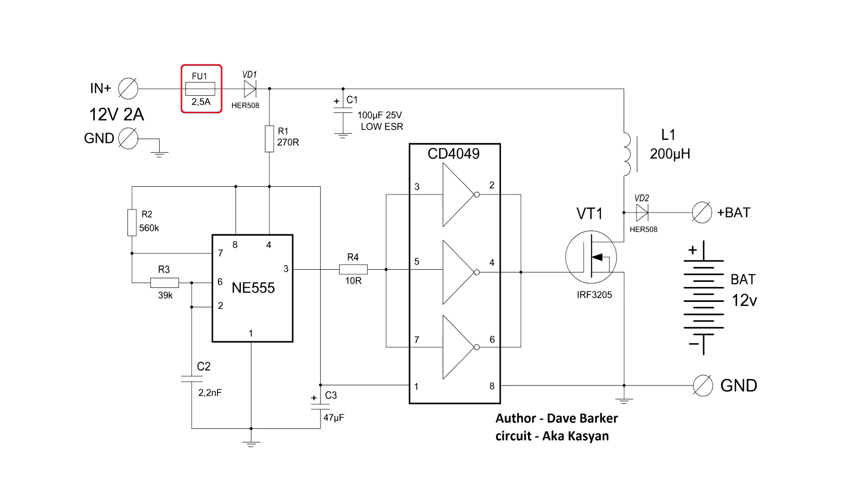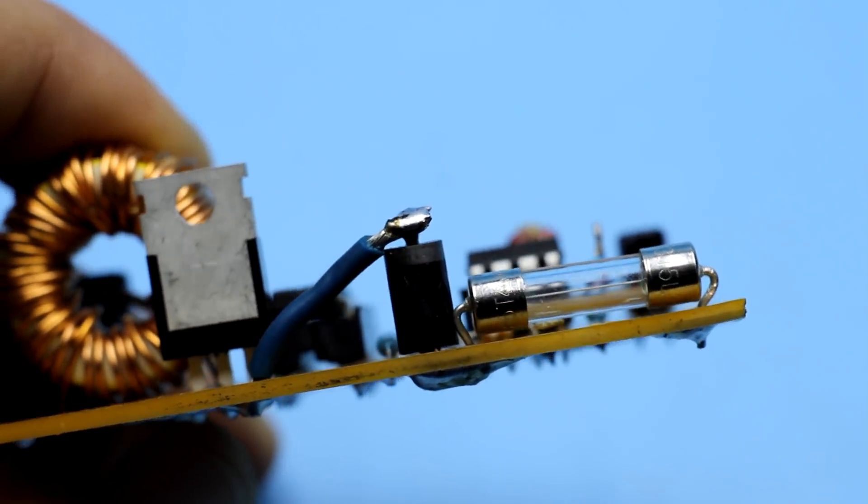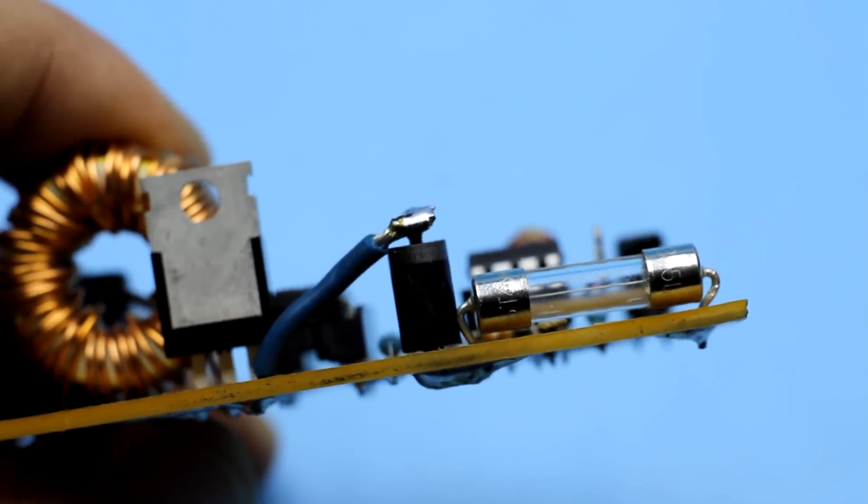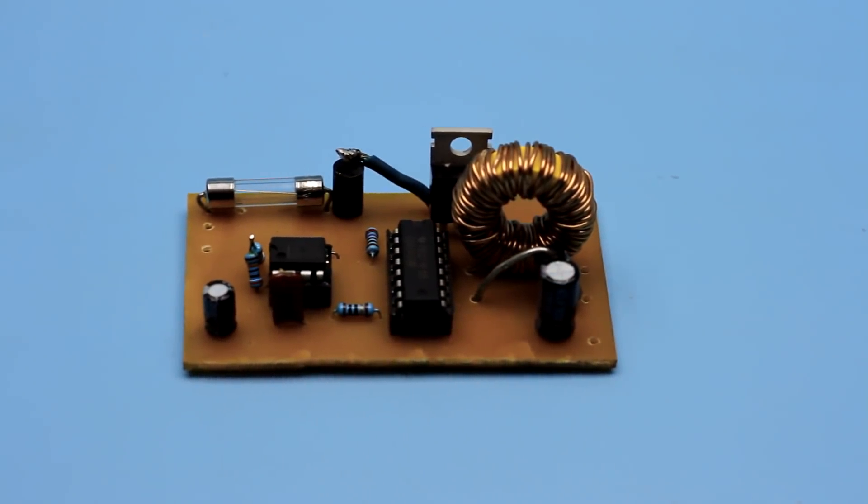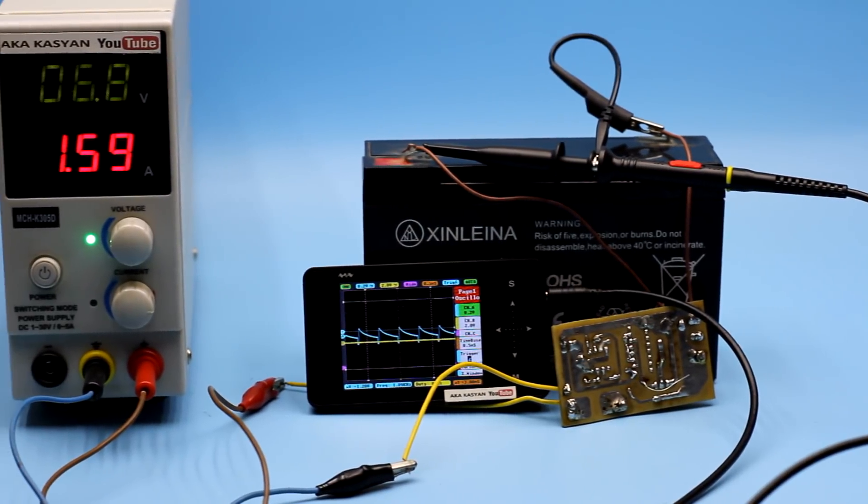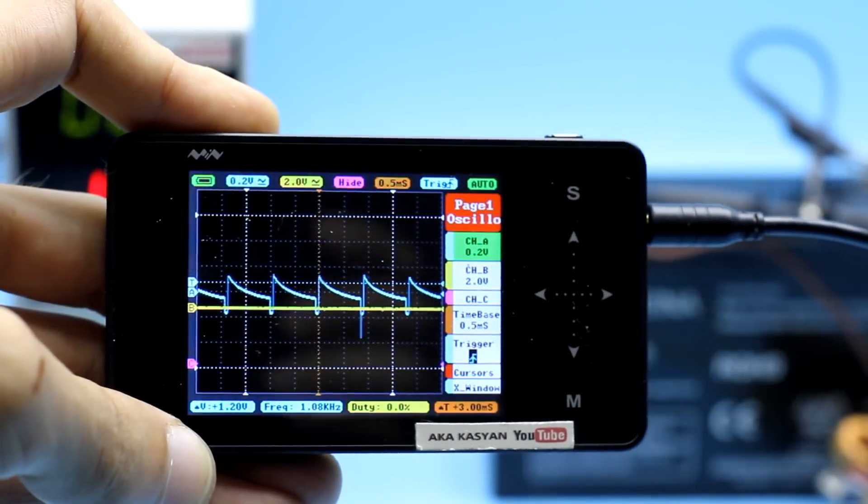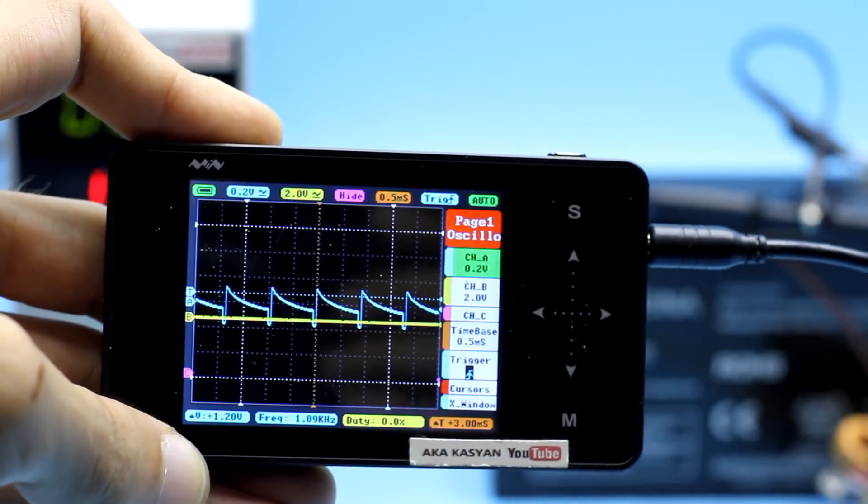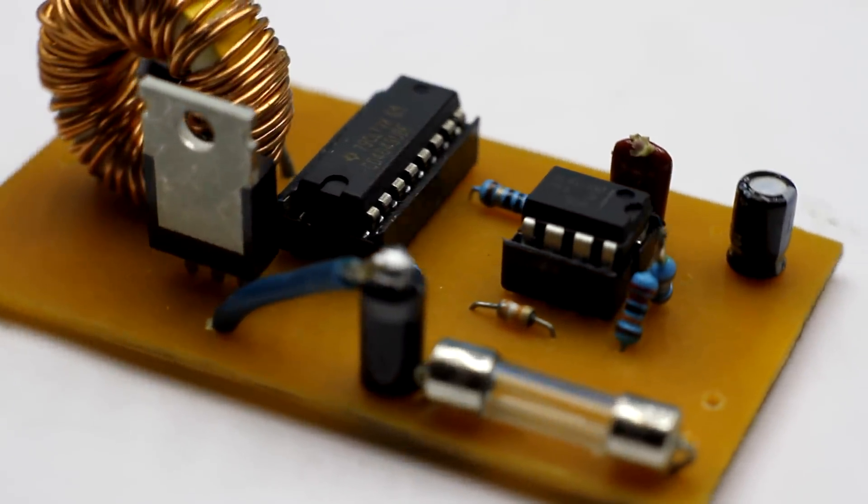At input of the circuit is a fuse and rectifier diode. The fuse will protect the disulfator with accidental short circuits at the output. The diode performs several functions. Firstly, it protects the circuit if you accidentally connect it to the charger incorrectly. And secondly, protects the charger from possible impulse noise and surges that are formed on the disulfator board. I think everyone understood how this works.